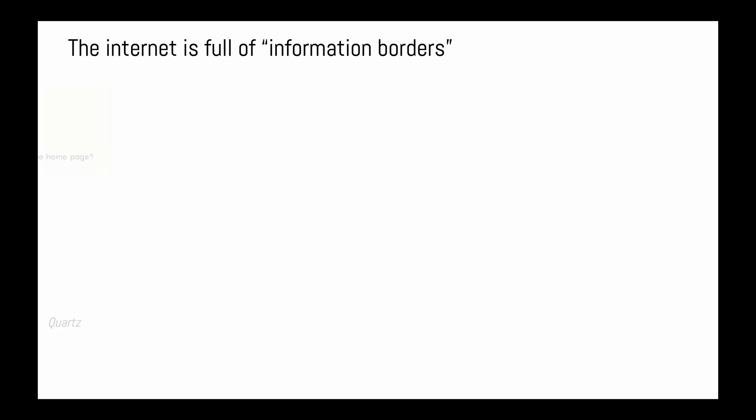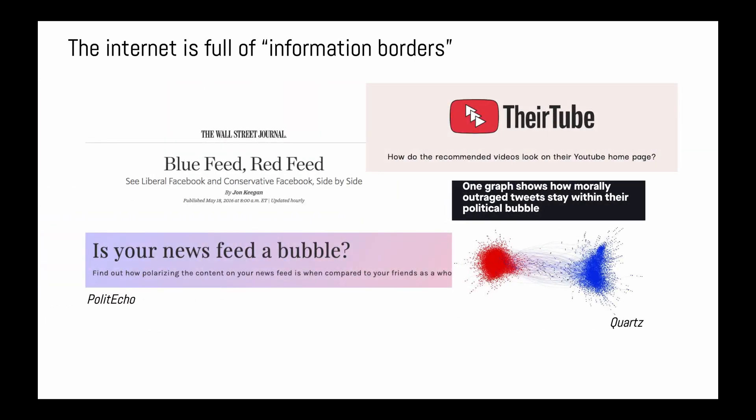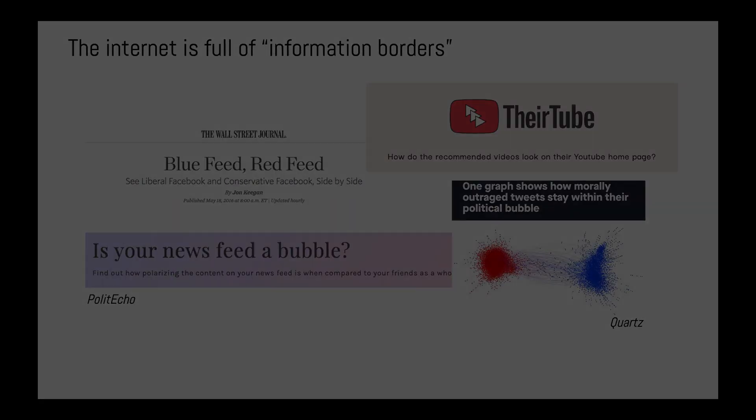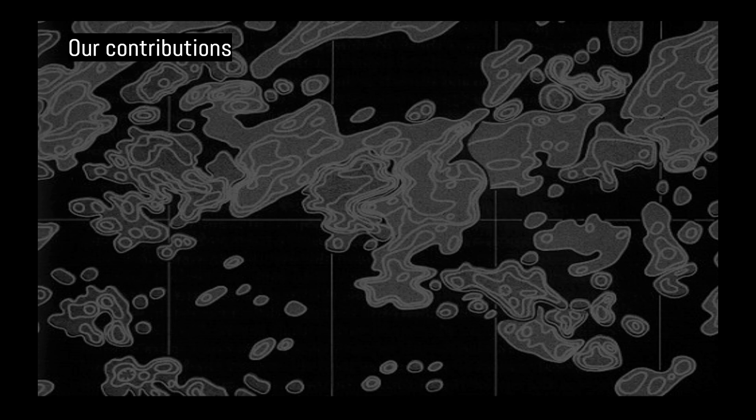For a particular query, many search engines tailor results according to geolocation, language, and other user profiling. In this sense, the internet is full of information borders that users cannot easily cross. To enable users to see and cross these borders, we present a critical intervention in the design of search interfaces.